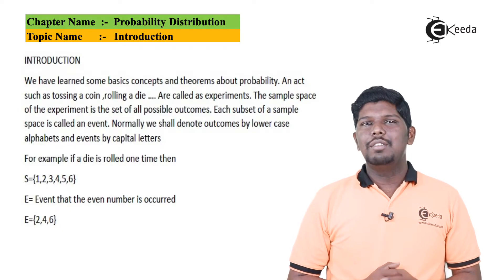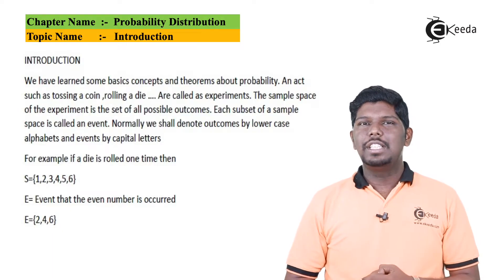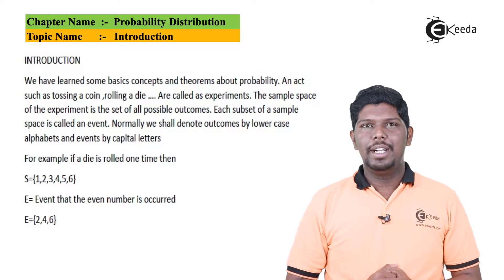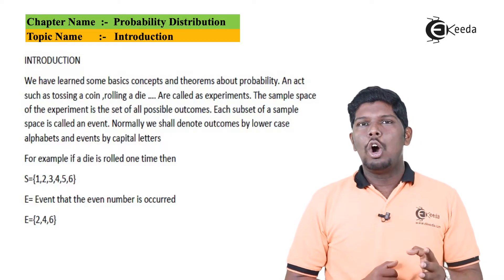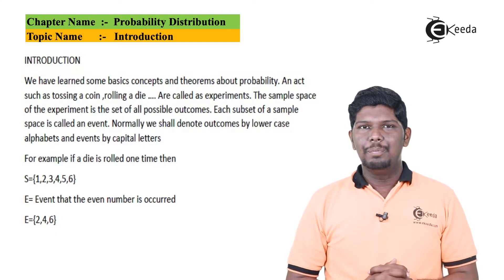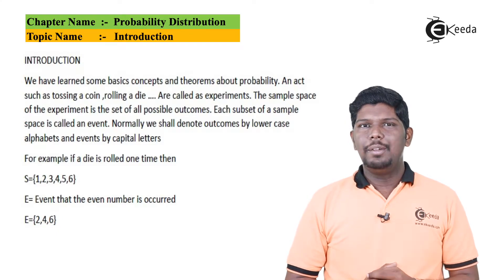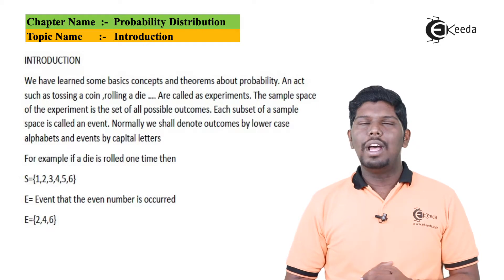In previous standards, we have learned certain basic concepts and theorems regarding probability. An act such as tossing a coin or rolling a die, so we have seen its outcome. What is basically probability? It is the chances of a particular outcome.